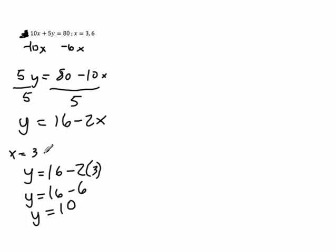So the value, whenever x equals 3, y is 10. And we can leave this as an ordered pair, 3 comma 10, or we could just simply state x equals 3, y equals 10 and put that around it.